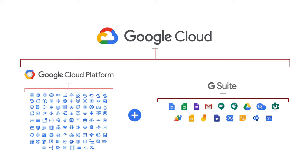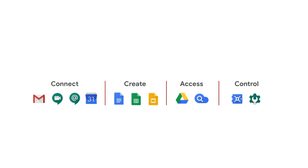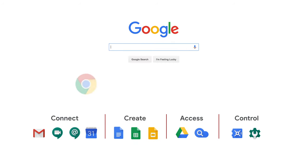You know — compute, storage, networking, security, serverless, and machine learning tools that you can rent in the cloud? In addition to cloud, Google has other apps for users, like Search, Chrome, YouTube, and Android.